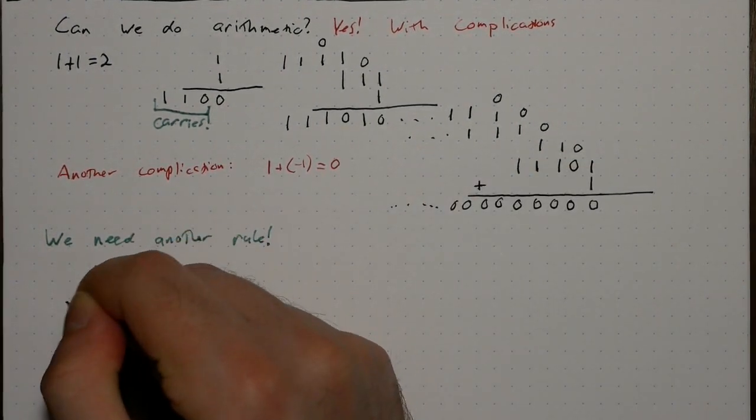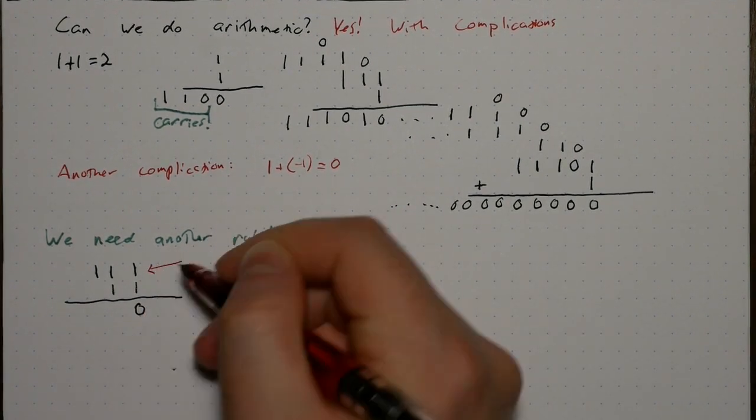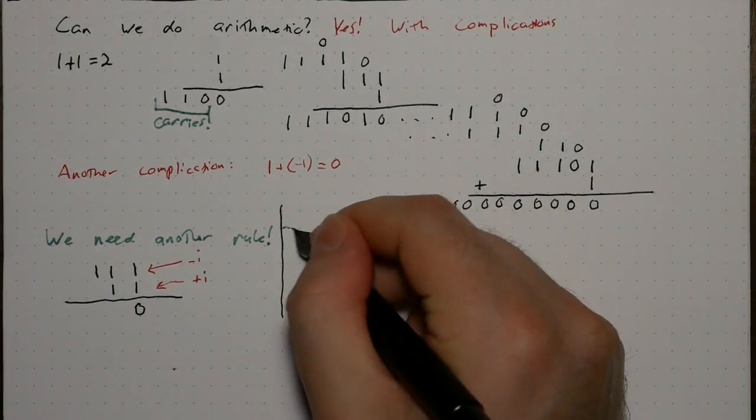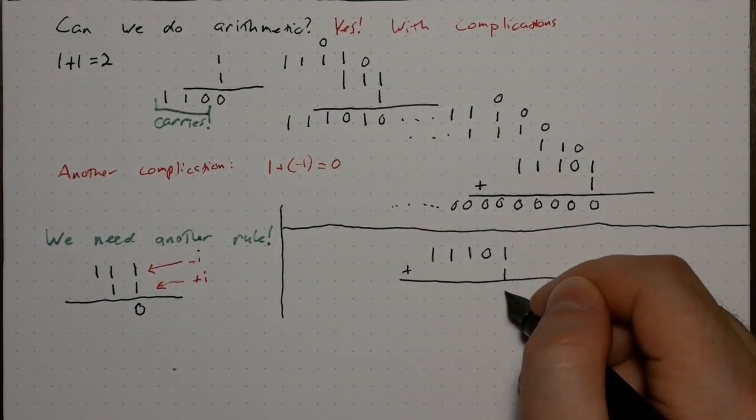And that rule is 111 plus 11 is 0, which corresponds to negative i plus i is equal to 0. Drawing negative 1 plus 1 again, and 1 and 1 is 0, carry 110.